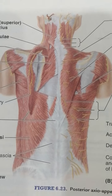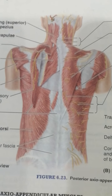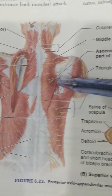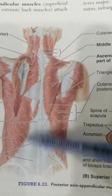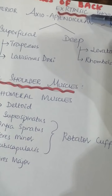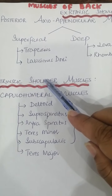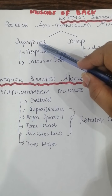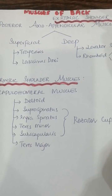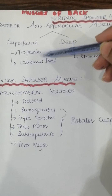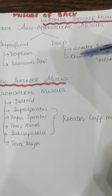The muscles of the back are divided into two main categories: extrinsic shoulder muscles and the intrinsic shoulder muscles. The extrinsic shoulder muscles are also termed as posterior axio-appendicular muscles because they are connecting the appendices to the axial skeleton. These posterior axio-appendicular muscles are divided into two categories: the superficial posterior axio-appendicular muscles and the deep axio-appendicular muscles.